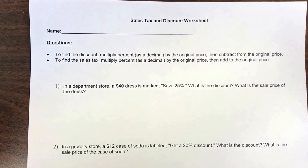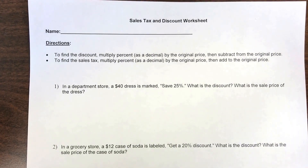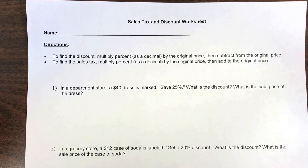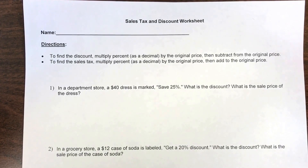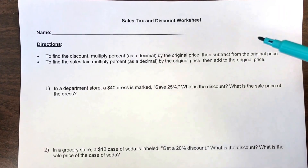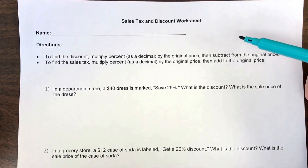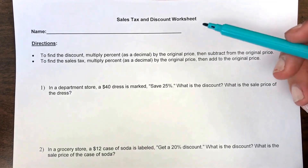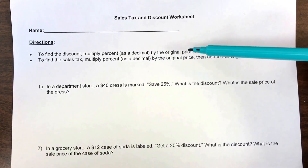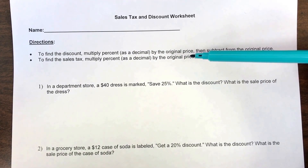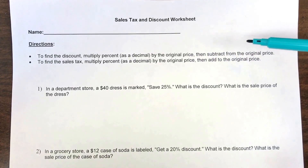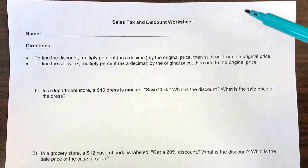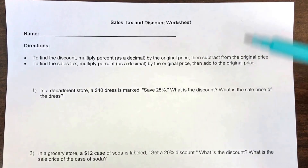In this video I'm going to show you how to find both discount and sales tax for an item. The directions say to find the discount you multiply the percent as a decimal by the original price and then subtract that from the original price. Let's pause there and try number one.